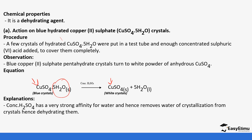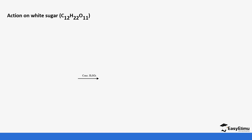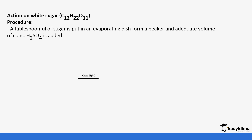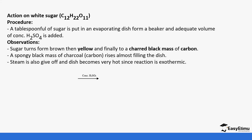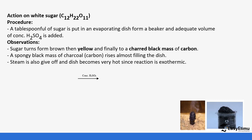Concentrated sulfuric acid has a very strong affinity for water and removes the water of crystallization from crystals, hence dehydrating them. Another reaction is with sugar. Sugar is a compound of carbon, hydrogen, and oxygen. When a tablespoon of sugar is placed in an evaporating dish and an adequate amount of concentrated sulfuric acid is added, the sugar turns yellow and then forms a black mass. This black charred mass is carbon rising to fill the beaker.